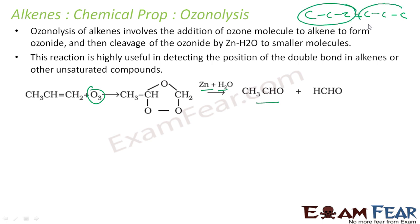If you got formaldehyde and CH3CH2CH2CH2COH, then you can see that double bond was here. So based on that, you can find the position of double bond.